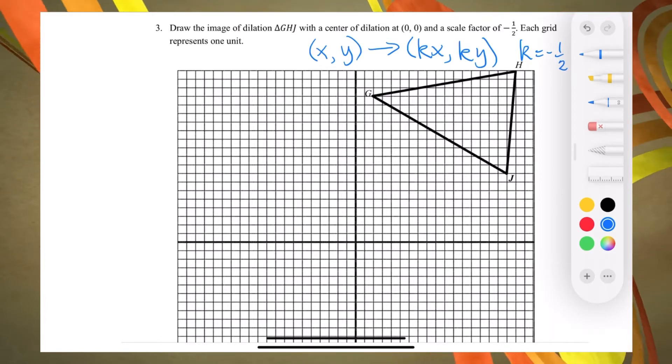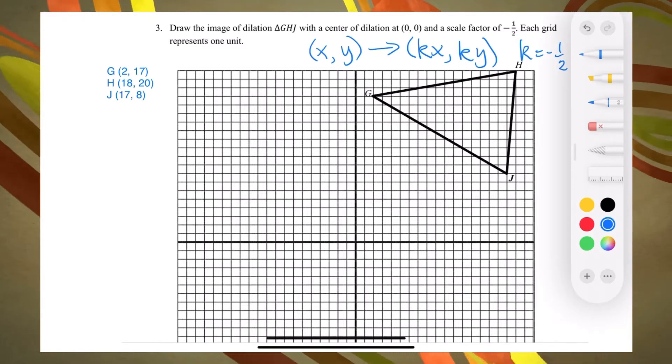I have identified the location of each vertex on the coordinate plane. G at 2,17, H at 18,20, and J at 17,8.